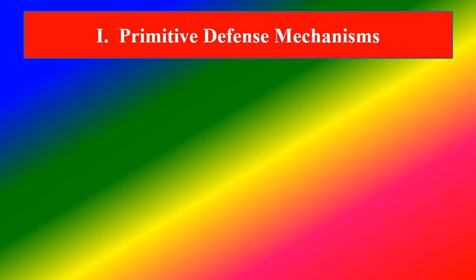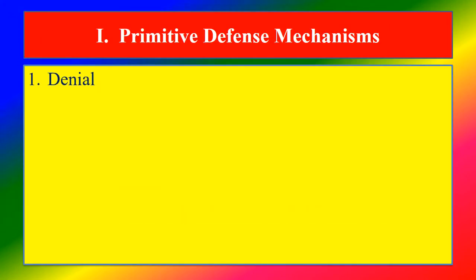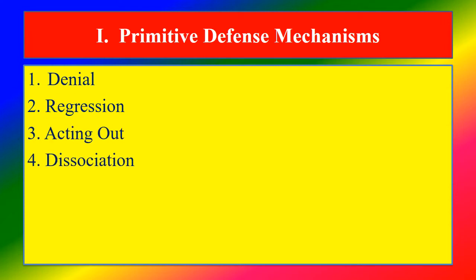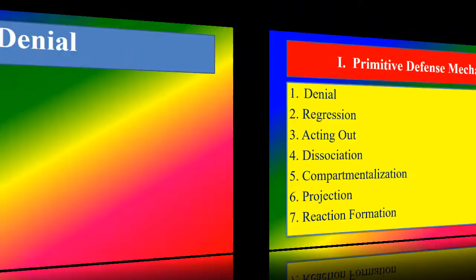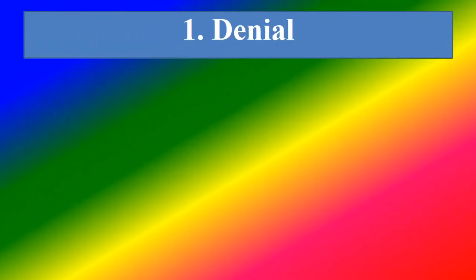The primitive defense mechanisms include: 1. Denial, 2. Regression, 3. Acting Out, 4. Dissociation, 5. Compartmentalization, 6. Projection, and 7. Reaction Formation.